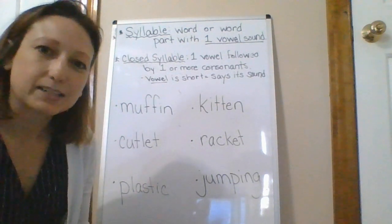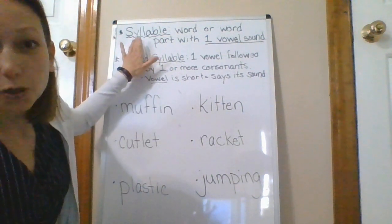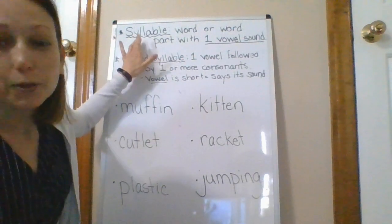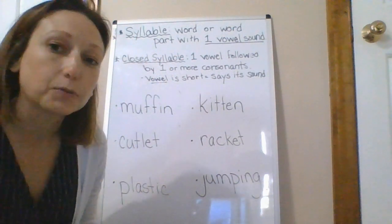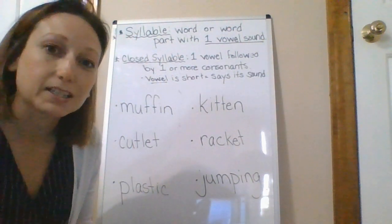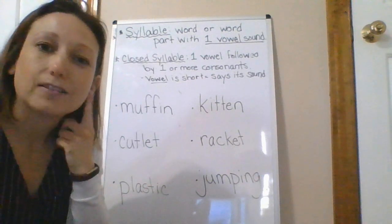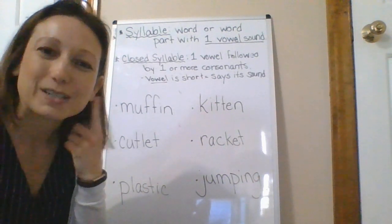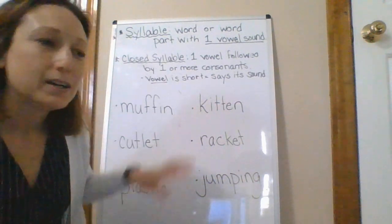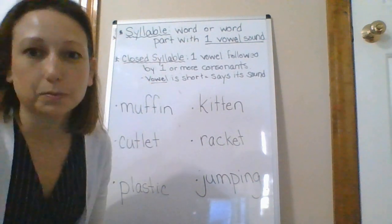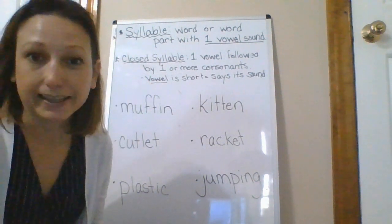In our last lesson, we talked about a syllable being a word or word part with one vowel sound. It could have more than one vowel when spelled, but it has only one vowel sound, and that's what we're listening for. We talked about closed syllables, open syllables, and silent E.